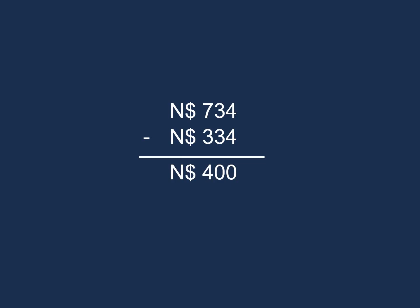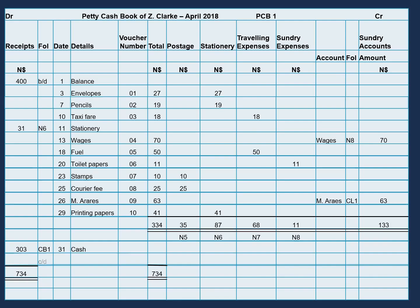Now let's go ahead and enter this transaction. There we go. In our folio column, we will enter carry down. The description in our details column will be balanced and the amount will be $400.